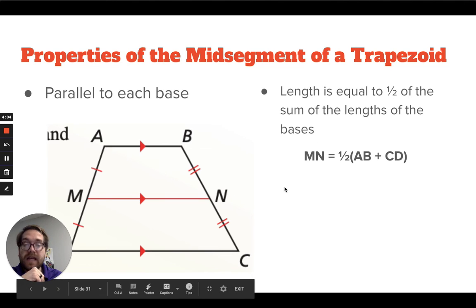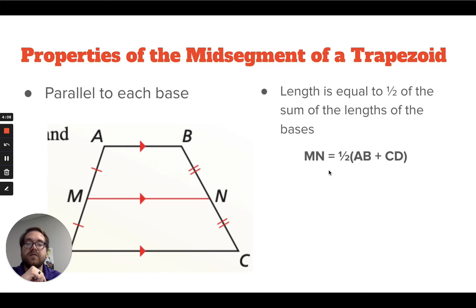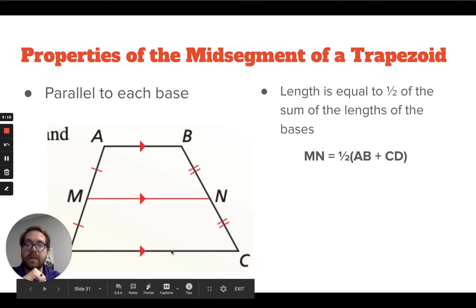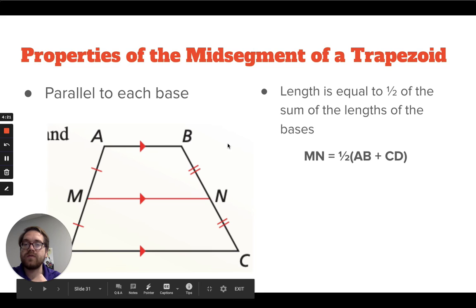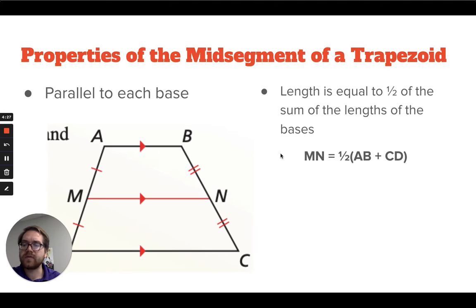The second property is that the length of the mid-segment is equal to half of the sum of the bases. So the length of segment MN equals the lengths of the two bases AB plus CD, divided by two. Those are the properties of the mid-segment. If you're working on a problem that concerns the mid-segment of a trapezoid, look at the properties of the mid-segment.